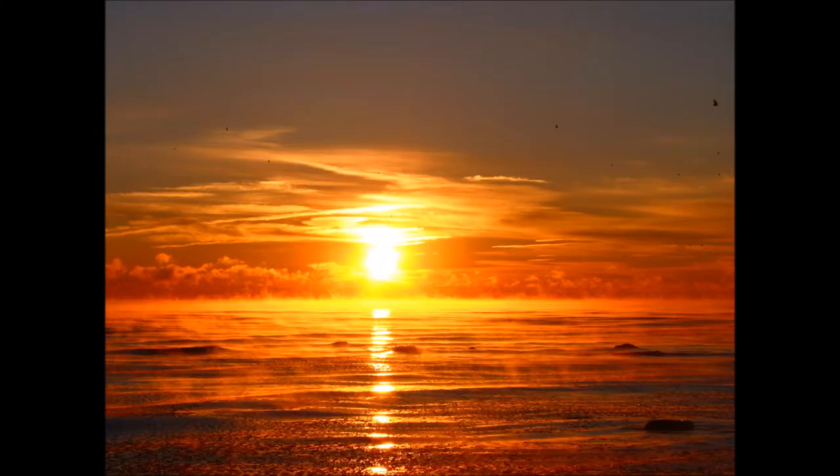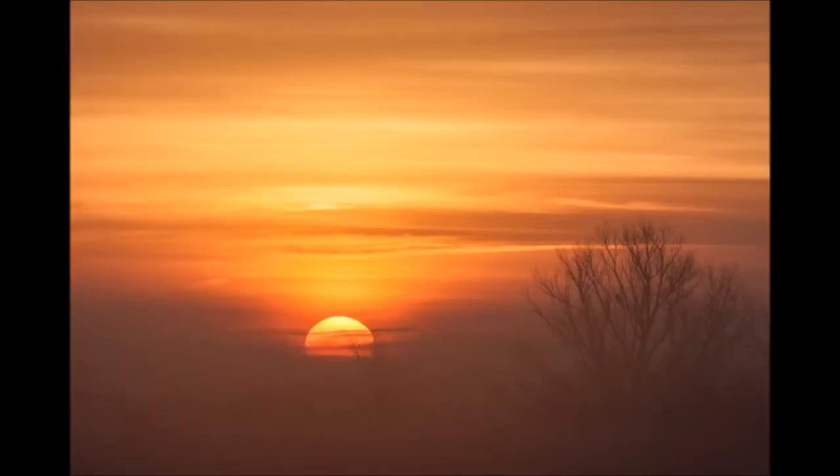But why do we see the sun in different colors, like red, yellow, and many different tones? Good question. This is a sunrise picture. As you can see, the sun is yellow. And here, it's red.